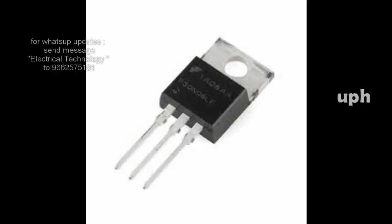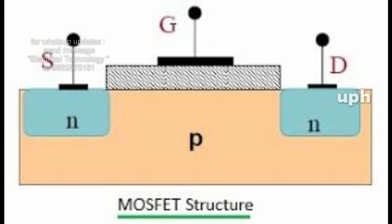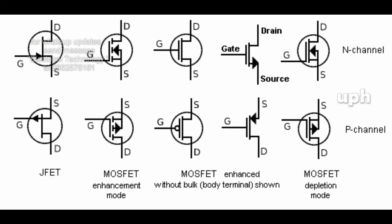MOSFET is a unipolar voltage-controlled device with 3 terminals: gate, drain, and source. The MOSFET has different modes: N-channel enhancement type, P-channel enhancement type, N-channel depletion type, and P-channel depletion type.